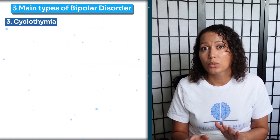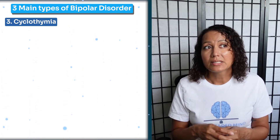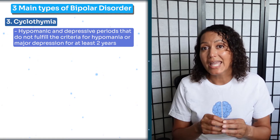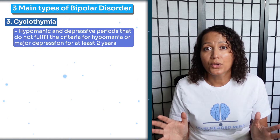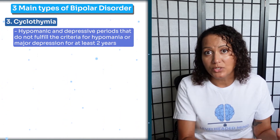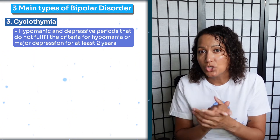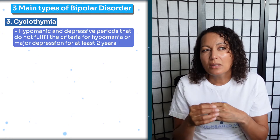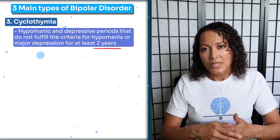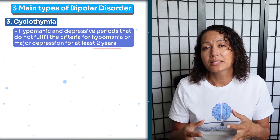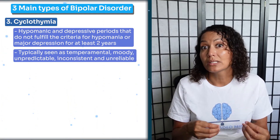The third type of bipolar disorder is cyclothymia. Cyclothymia involves having some hypomanic symptoms and depressive-type episodes that don't fully meet the criteria for a major depressive episode or a full hypomanic episode — it's like a mix of the two. These symptoms persist for a long period of time, at least two years. These patients are typically seen as temperamental, moody, unpredictable, inconsistent, and unreliable.